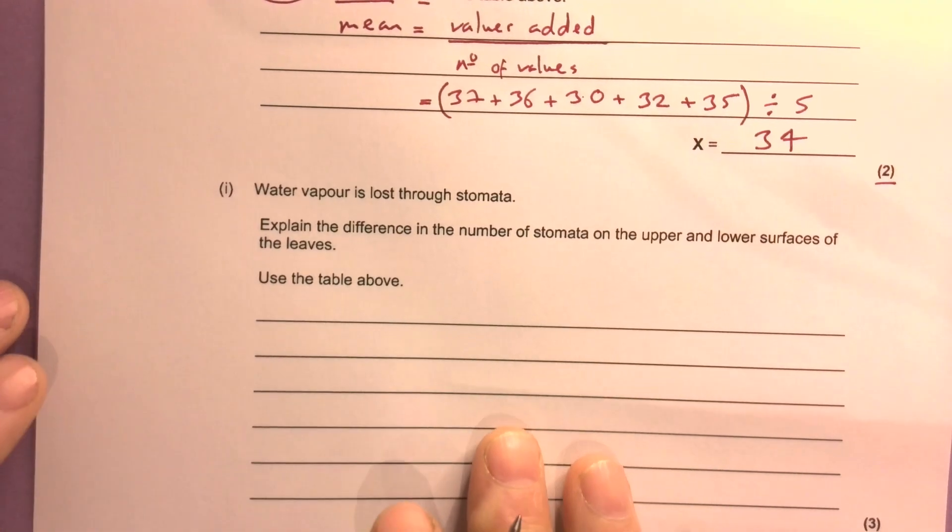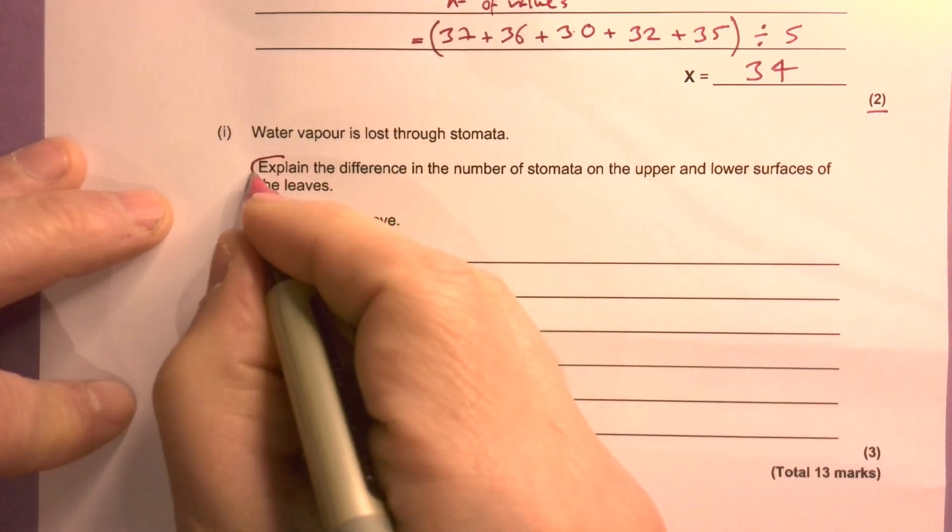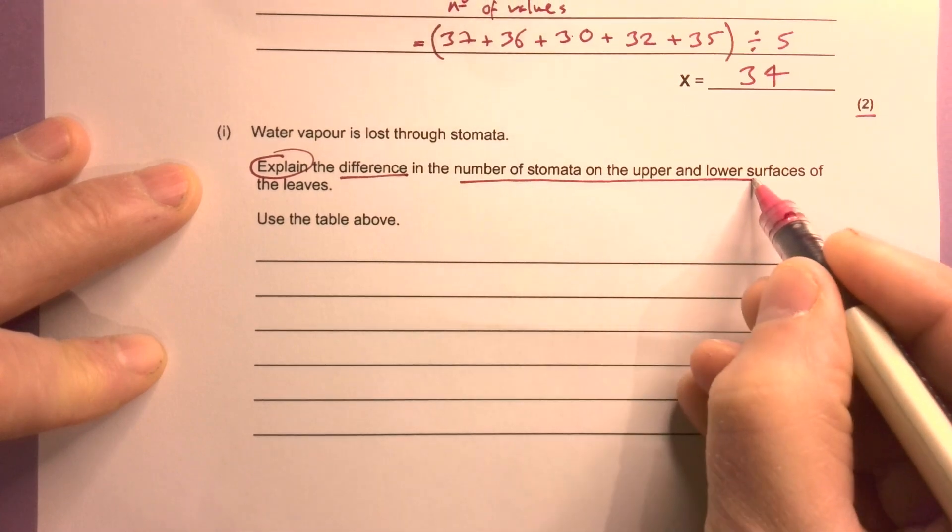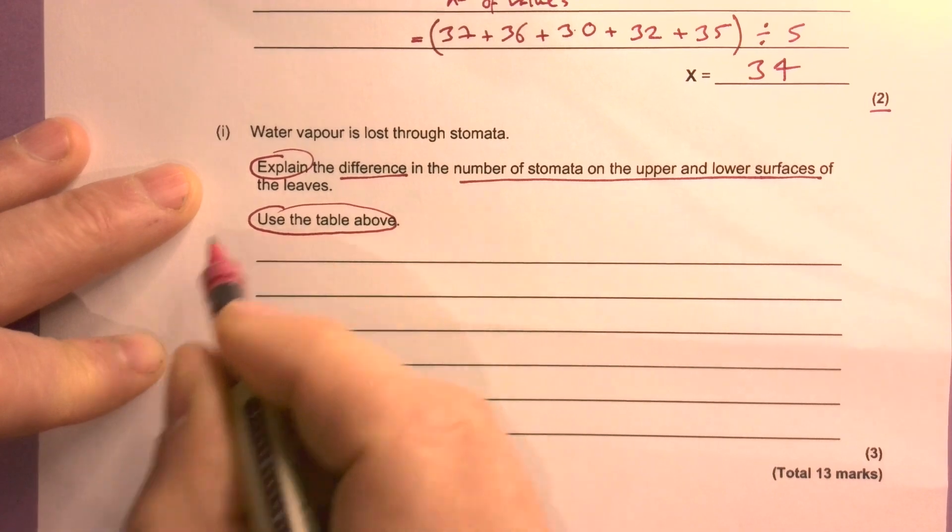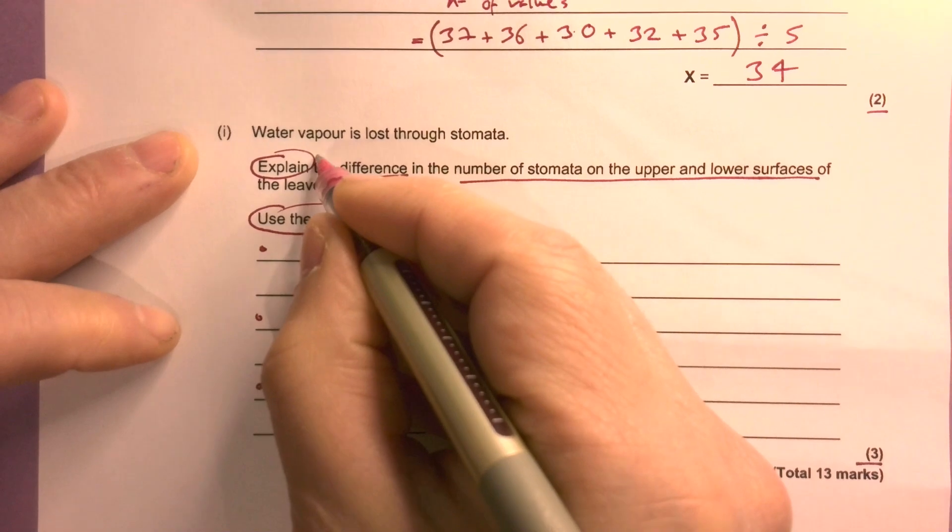Water vapour is lost through stomata. Explain the difference in the number of stomata on the upper and lower surfaces of the leaves. Use the table above. It's worth three marks.